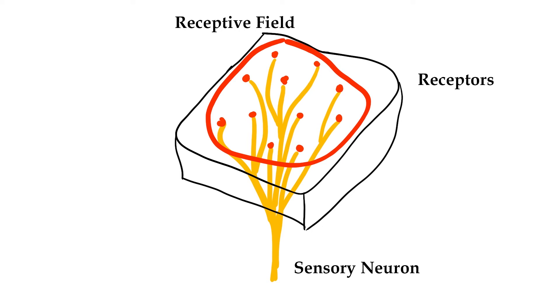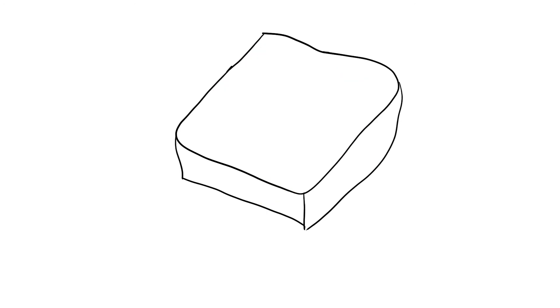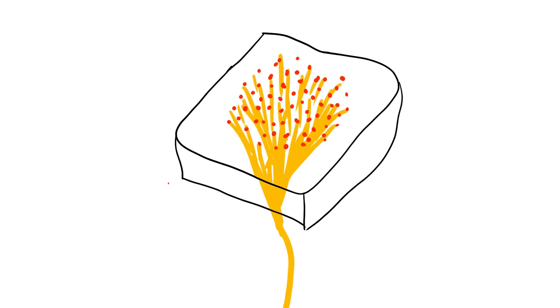Now, a lot of the sensitivity you have to stimuli comes from the density of these receptive fields. And by density, I mean how many receptors per unit area in the skin. So let's say we have this same dimension of skin. But in this receptive field, we have this many receptors. So now we have a higher concentration or a higher density of receptors in this area. Meaning this area is probably going to be more sensitive.